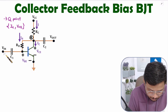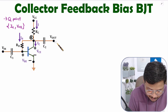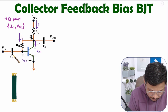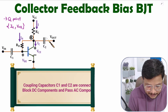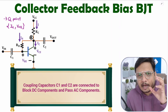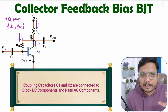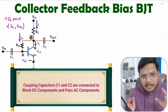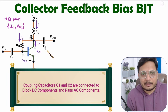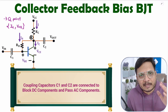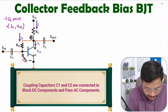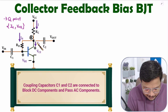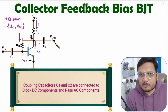At the base we give input, and from the collector we take output. Before the input we connect coupling capacitor C1, and at the output side coupling capacitor C2. These coupling capacitors block DC components and pass only AC components. So VIN is an AC signal — the DC component is blocked by C1 so only the AC component enters the circuit, and C2 blocks the DC component so only the AC output appears at the output side.